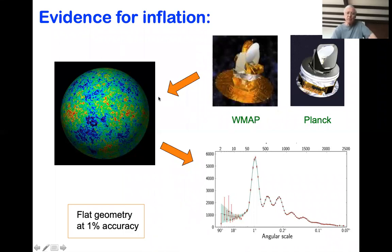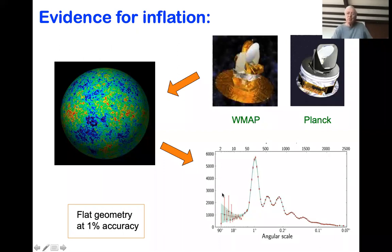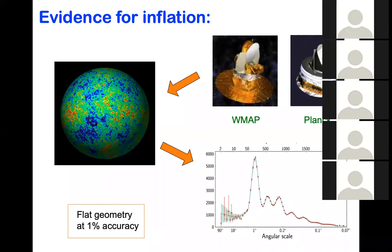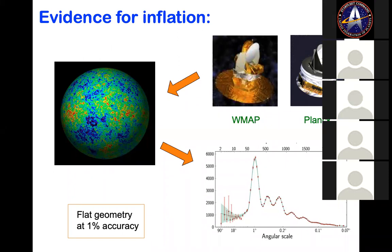This inflationary scenario makes a number of predictions, one of them being the flatness of the universe and another being the spectrum of density perturbations. They have very impressive observational support, much of it coming from observations of the cosmic microwave background radiation by satellite missions. You get a map of the intensity of radiation over the sky, then expand it in spherical harmonics and plot the power spectrum. The agreement between the predicted spectrum and the observed one is rather spectacular, and the flat geometry predicted by inflation is also confirmed with high accuracy. We should therefore take this scenario seriously.